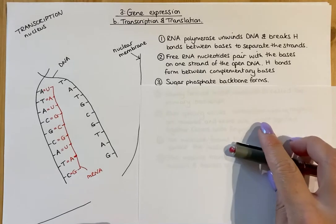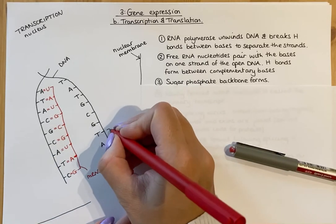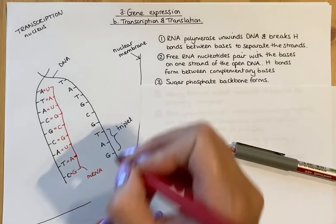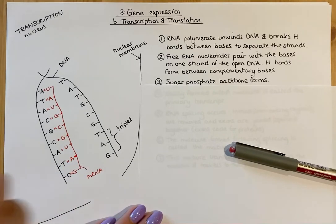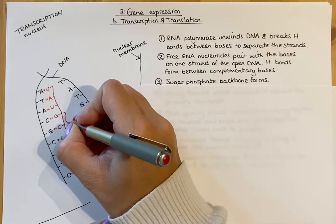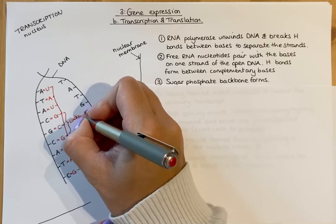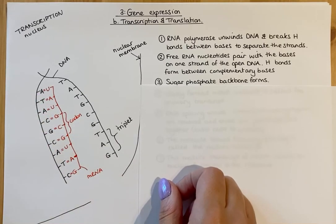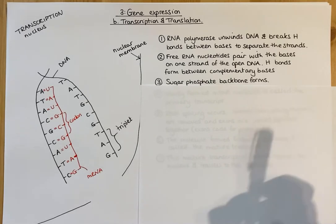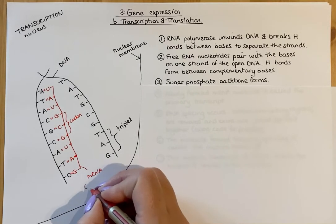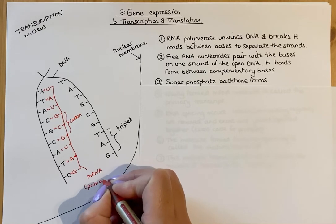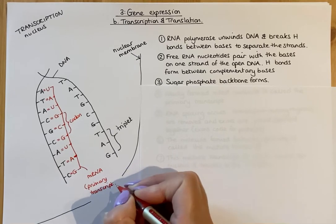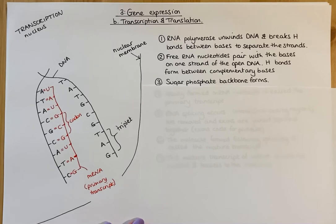A few points to note: if we talk about DNA molecules, three bases on the DNA would be known as a triplet. Whereas three nucleotides on an mRNA molecule would be what's known as a codon. This strand of mRNA that we have here is known as the primary transcript, because it is the first copy that's made of DNA. Transcribe just means to copy, so that primary transcript is formed.